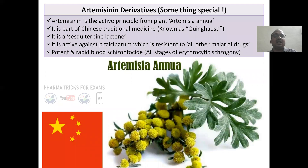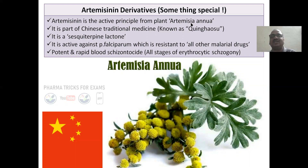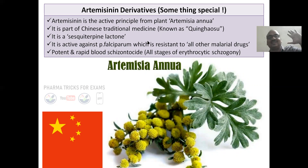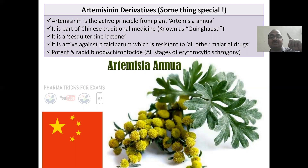Artemisinin — an active principle obtained from a plant that grows in China, known as Qinghaosu. It is part of Chinese traditional medicine. It is a sesquiterpene lactone. Artemisinin is active against Plasmodium falciparum, which has become resistant to all other anti-malarial drugs. However, artemisinin kills this resistant Plasmodium falciparum — very important.